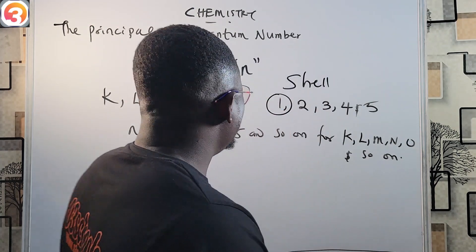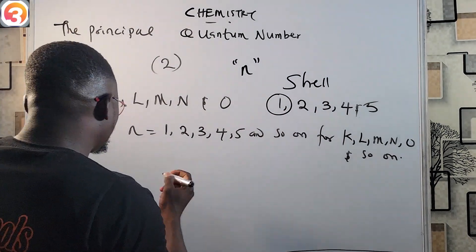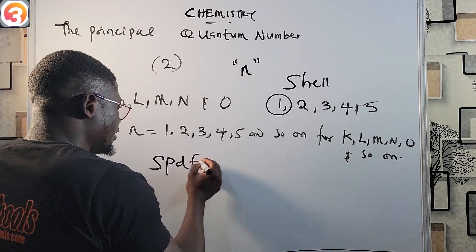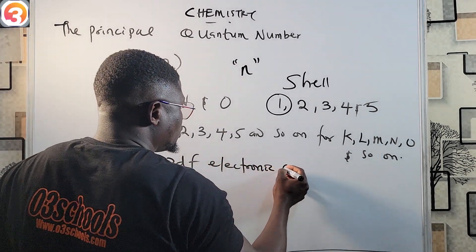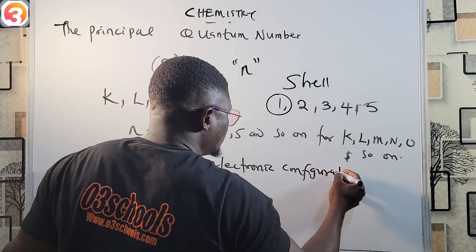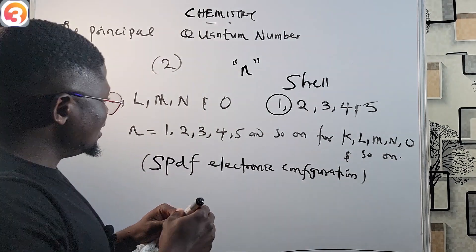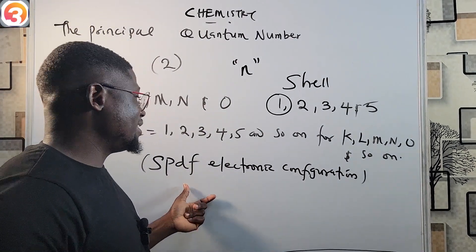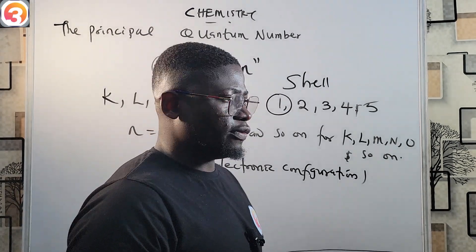The principal quantum number is also useful in writing the spdf electronic configuration.